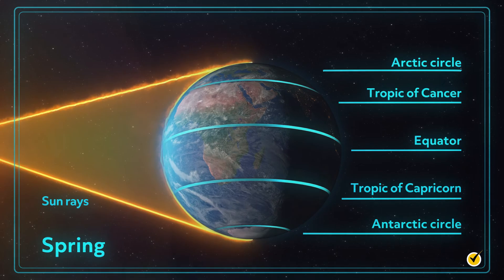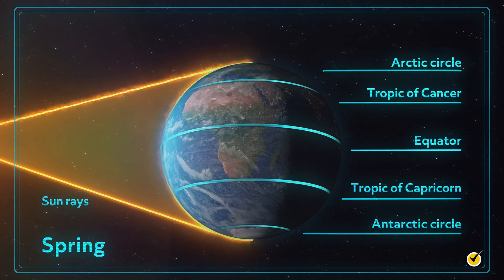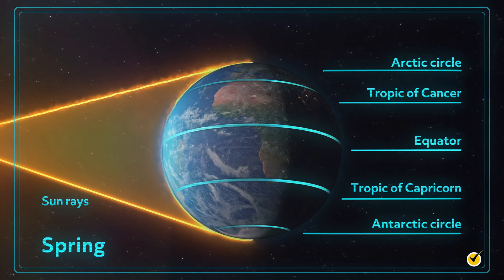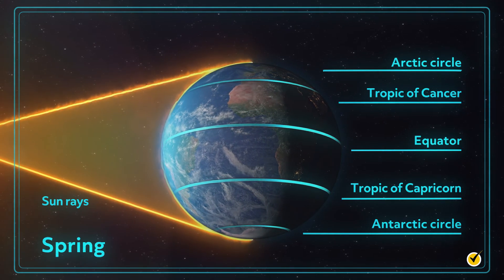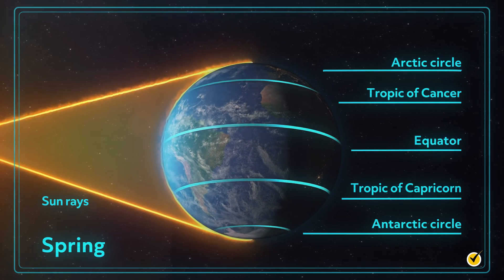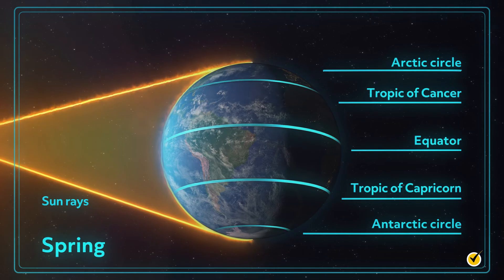We've learned a lot from this image so far. In the springtime, the Sun's rays hit the equator at a perpendicular angle, meaning it receives the most direct concentrated sunlight. The Tropic of Cancer and Tropic of Capricorn receive equal amounts of sunlight as each other, as do the Arctic Circle and Antarctic Circle.